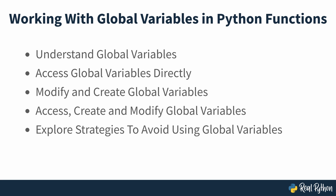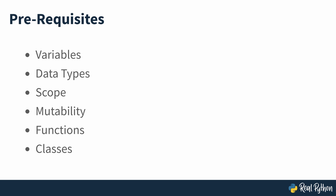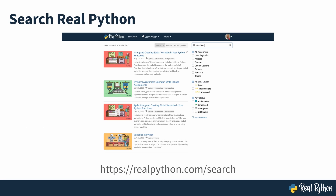To follow along with this course, you should have a solid understanding of Python programming, including fundamental concepts such as variables, data types, scope, mutability, functions and classes. If you need to look further at any of these areas, then RealPython has you covered, and you can use the search function on the site to access courses and tutorials on each of them.